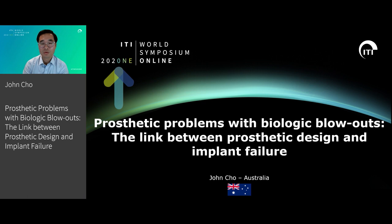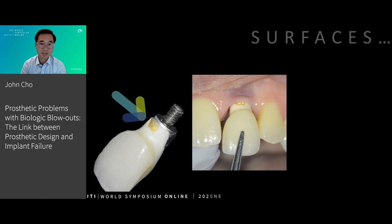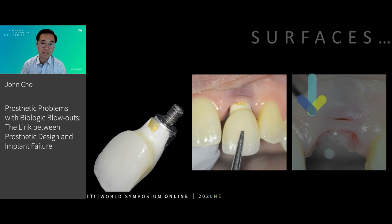I'd like to start today's presentation with a seemingly small and perhaps seemingly insignificant case of a small amount of porcelain which has chipped off this cervical area of this implant-supported crown. And you can see it's exposed some of the rough underlying metal framework, which corresponds to a small dehiscence or a cleft in the patient's tissue in this site.